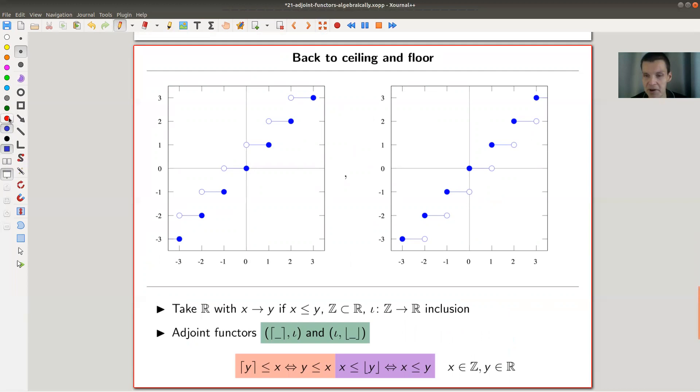The ceiling and the floor function are actually adjoint functors for the inclusion. I never remember which one is the left one, which one is the right one. But apparently, I wrote it down. So the ceiling function is the left adjoint.